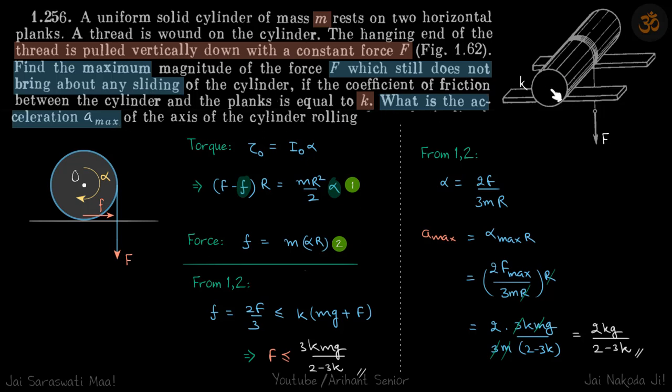Now which direction will be the friction? Whenever we need to find the direction of friction, what we do is imagine what will happen if there were no friction, then in which direction the slipping is happening, and in the opposite direction the friction will occur.